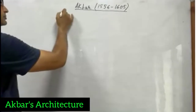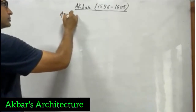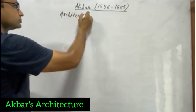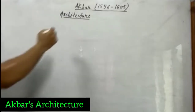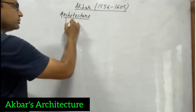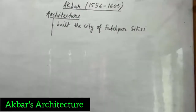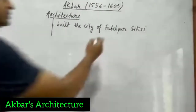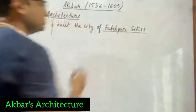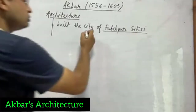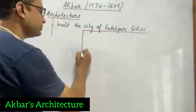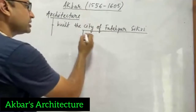Now when we talk about Akbar's architecture, the first thing he built was the city of Fatehpur Sikri. He shifted the capital to Fatehpur Sikri for some time, and since he was building a capital, he constructed many palaces and buildings there. Some monuments from Fatehpur Sikri I will explain separately.